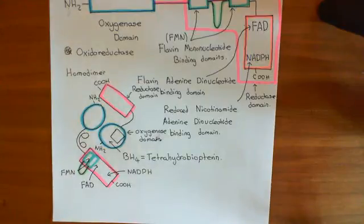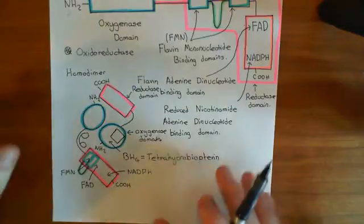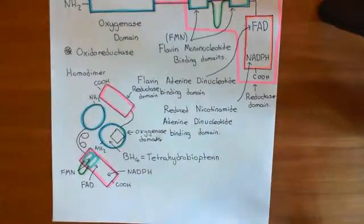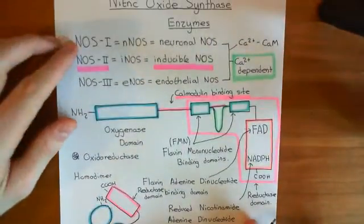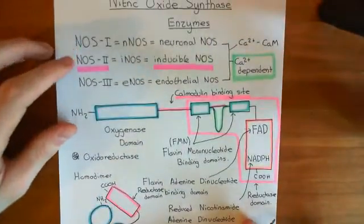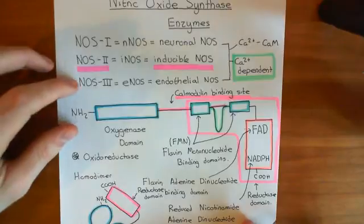Welcome to this next video in which we are discussing the nitric oxide synthase enzymes. So far, what we've discussed is that there are three proteins, three different types of NOS protein, which are by the name of NOS1, NOS2, and NOS3.